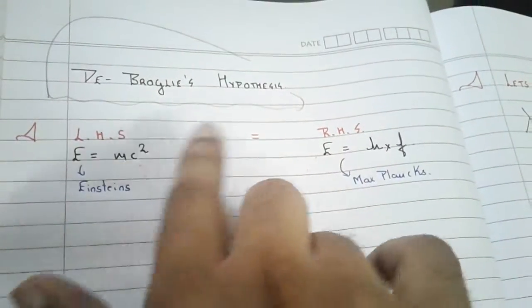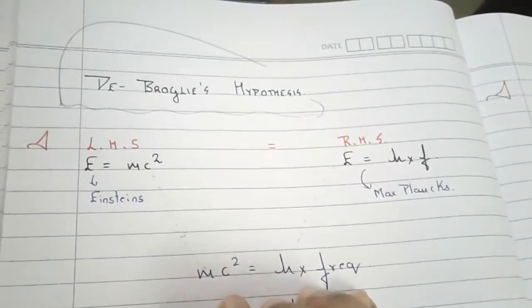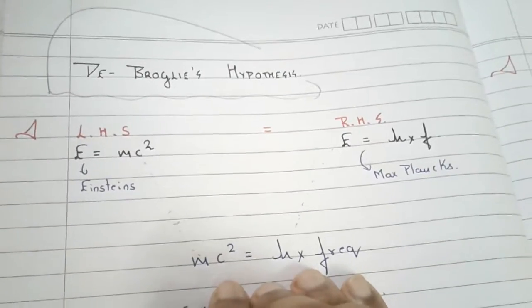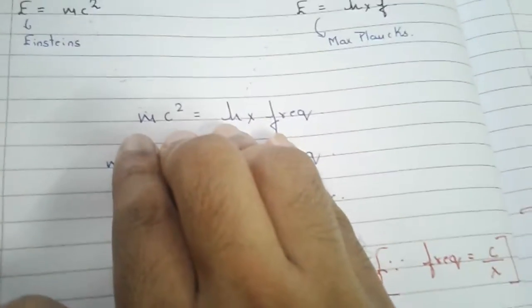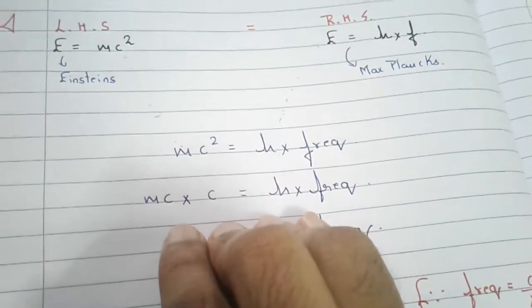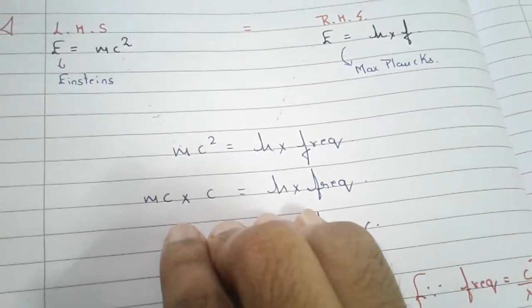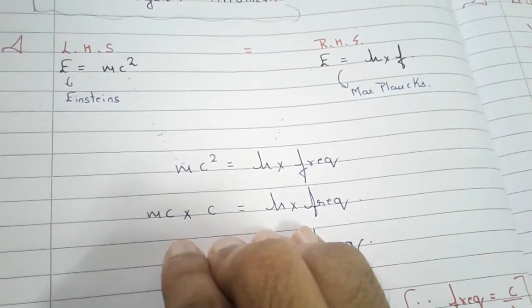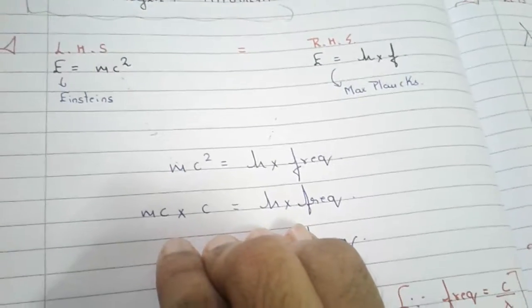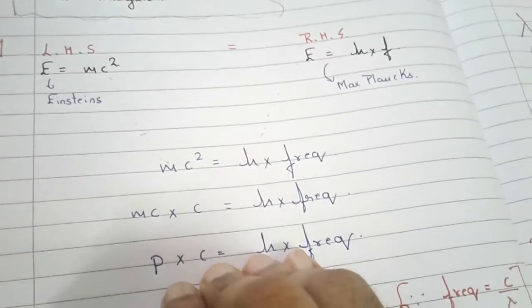He said mc squared equals h times frequency — combining Einstein's equation and Planck's equation. Then mc squared can be written as mc times c equals h times frequency. This is done so that mc can be written as momentum, since momentum is mass times velocity — in this case, the velocity of light. So mc represents the momentum of a photon. Momentum is written as p in many textbooks.